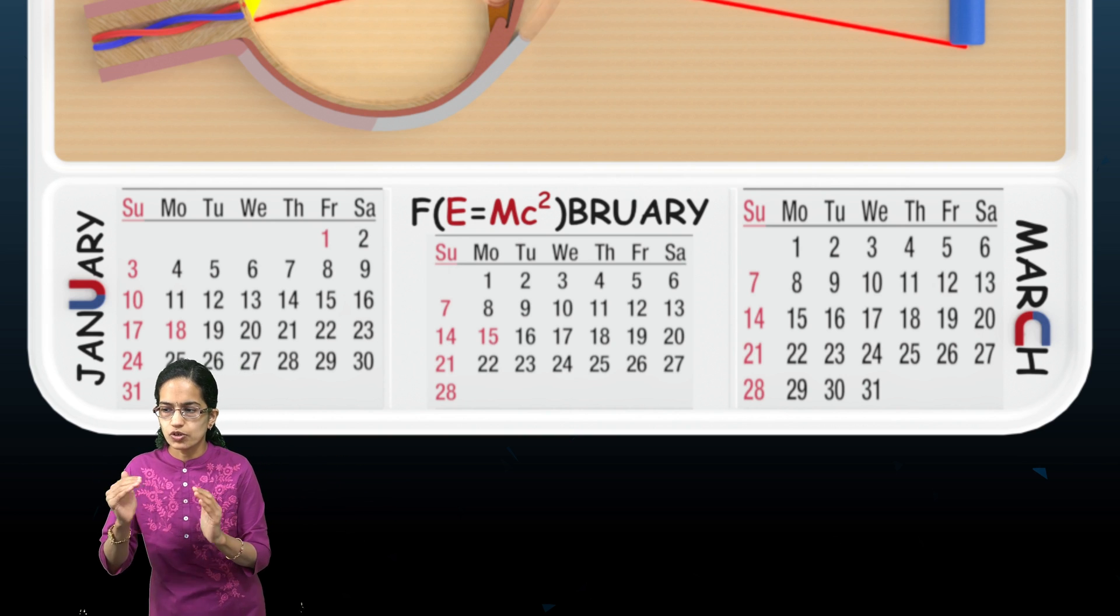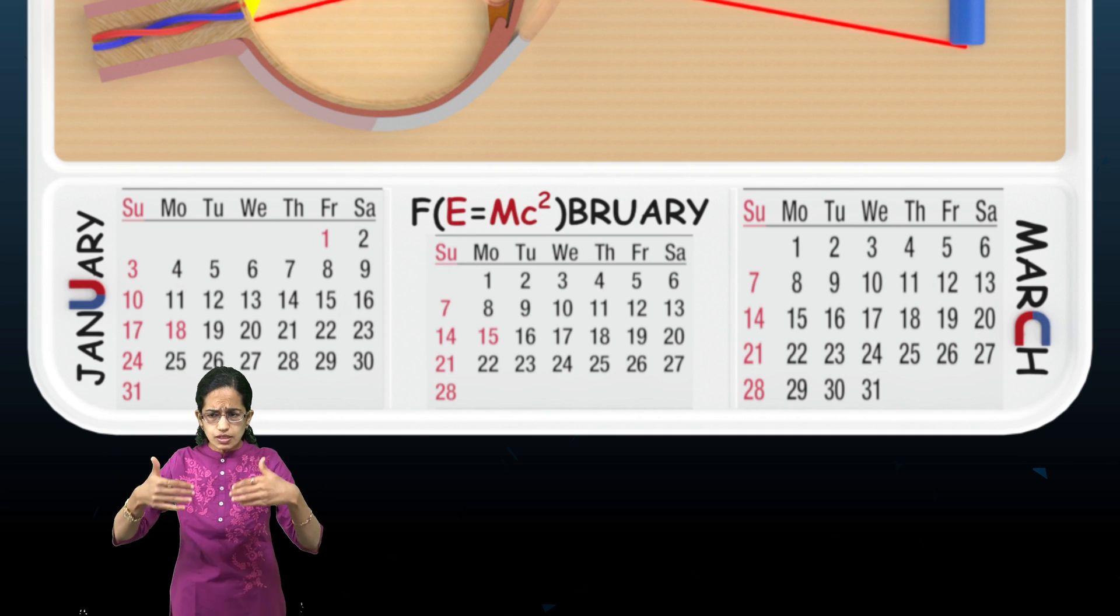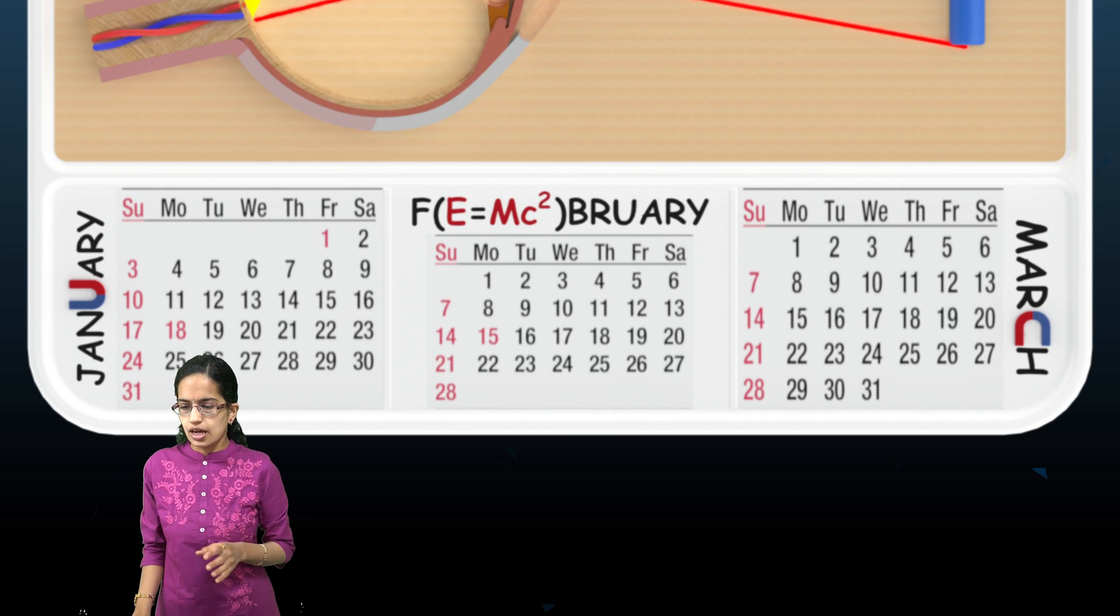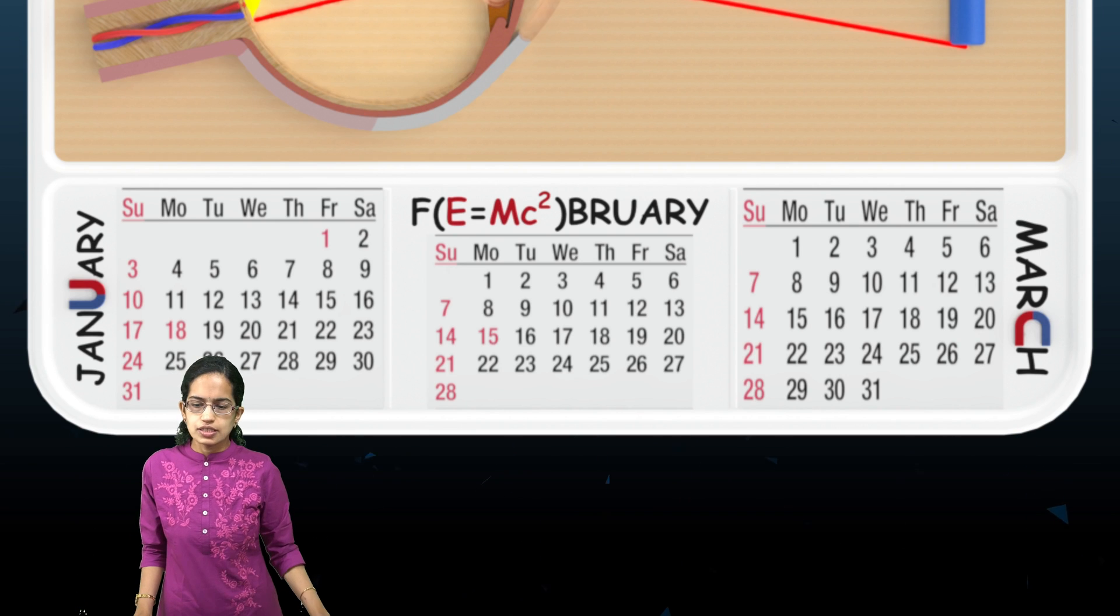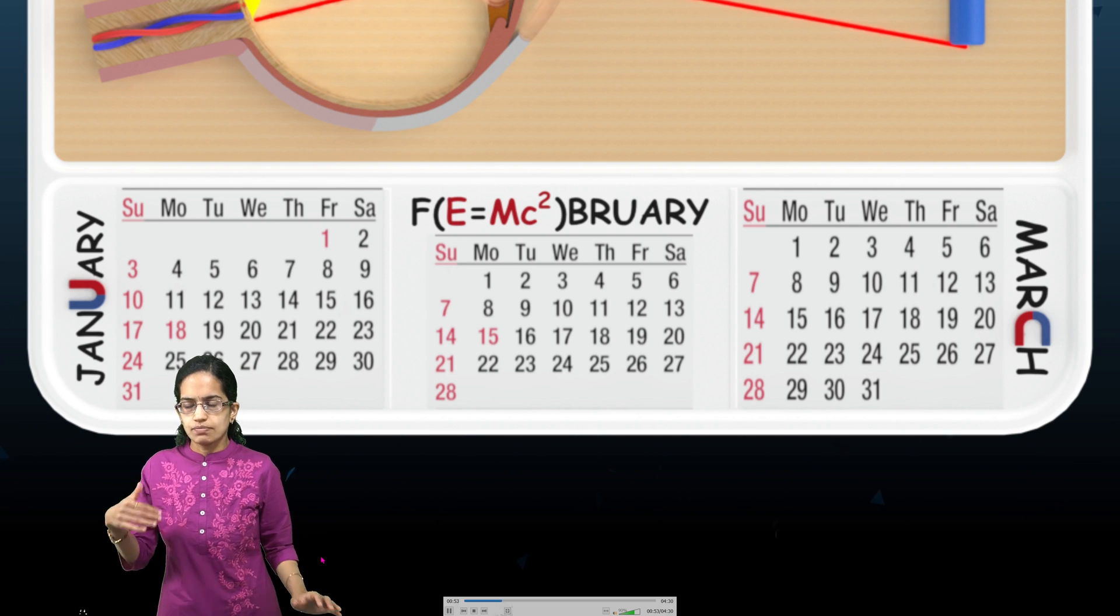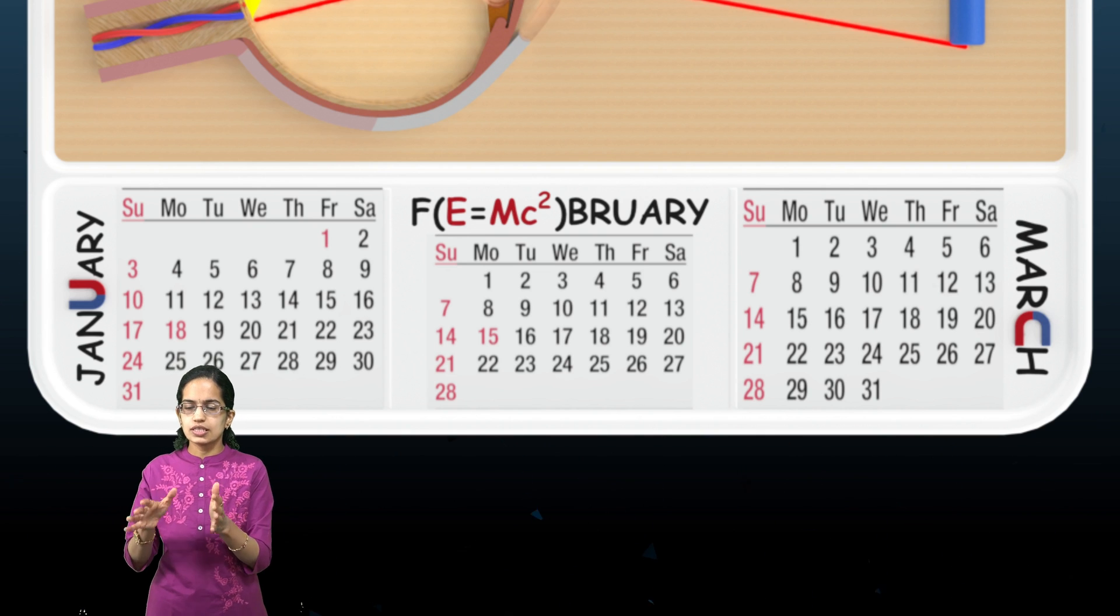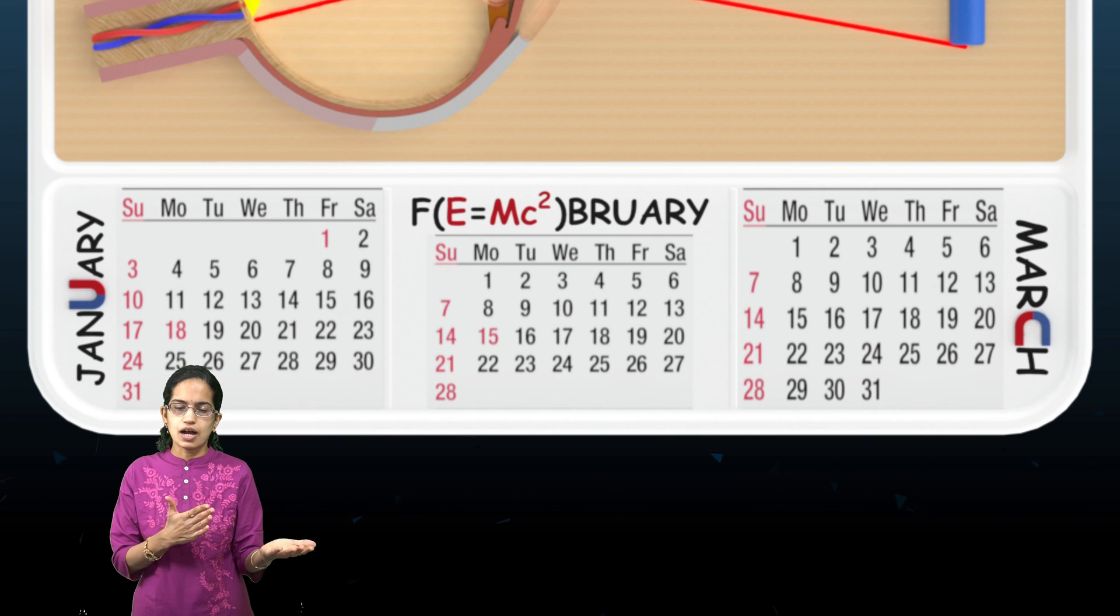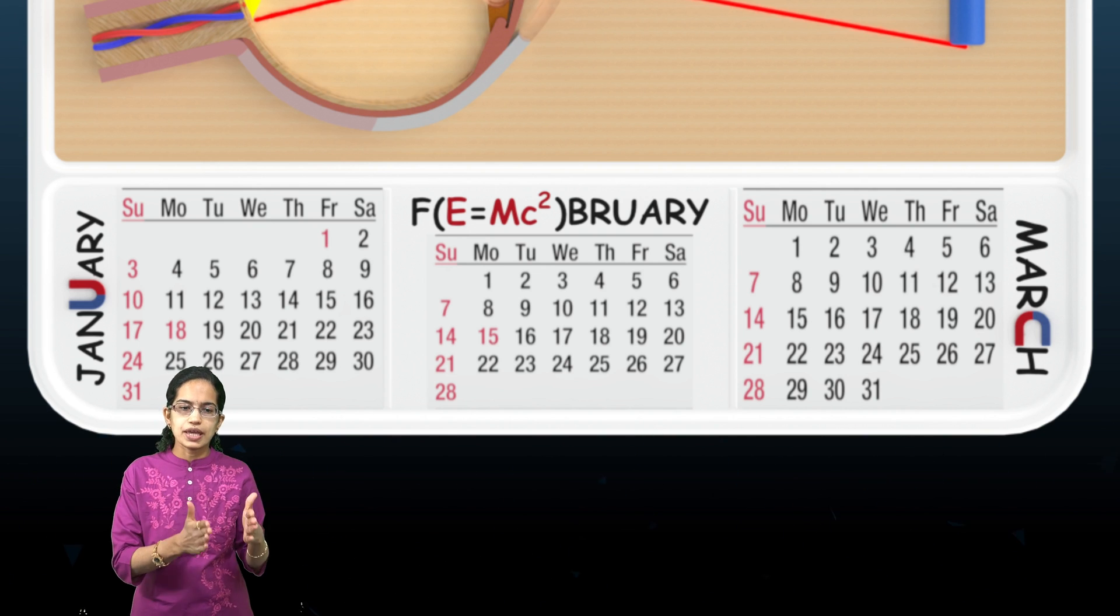In the physics section, we would be relating the calendar months to physics. Moving forward, we have sections from other subjects. This is the physics calendar that we have covered. Next, we come to the next three months: April, May, and June.